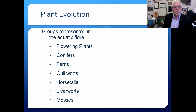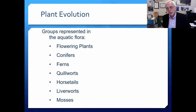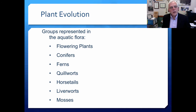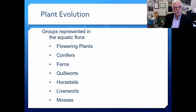In plant evolution, the plants we're going to talk about are in several different groups represented in the aquatic flora. They are the flowering plants, the conifers, ferns, quillworts, horsetails, liverworts, and mosses. I thought it might be useful to look through each of these kinds of plants in sequence so that you can see what kinds of plants are actually involved in the aquatic macrophytic vegetation.